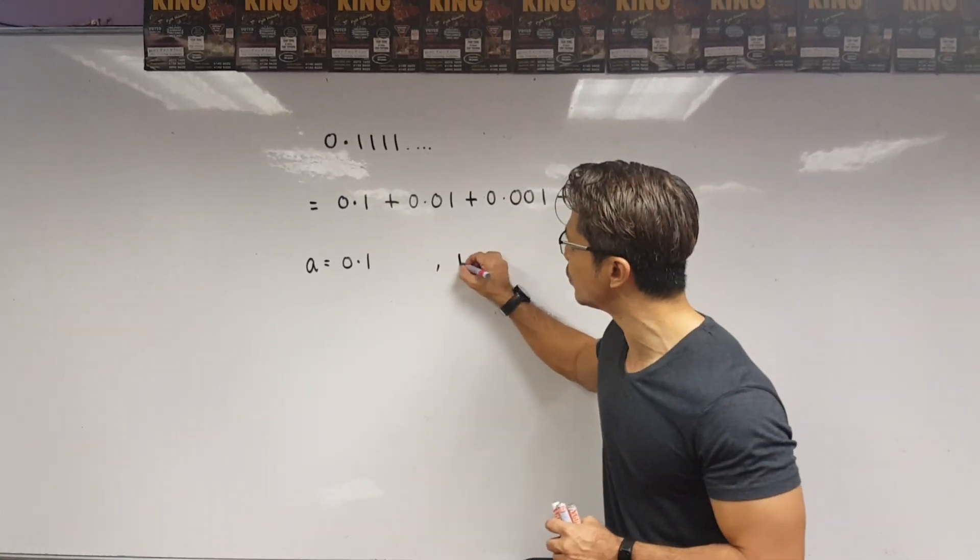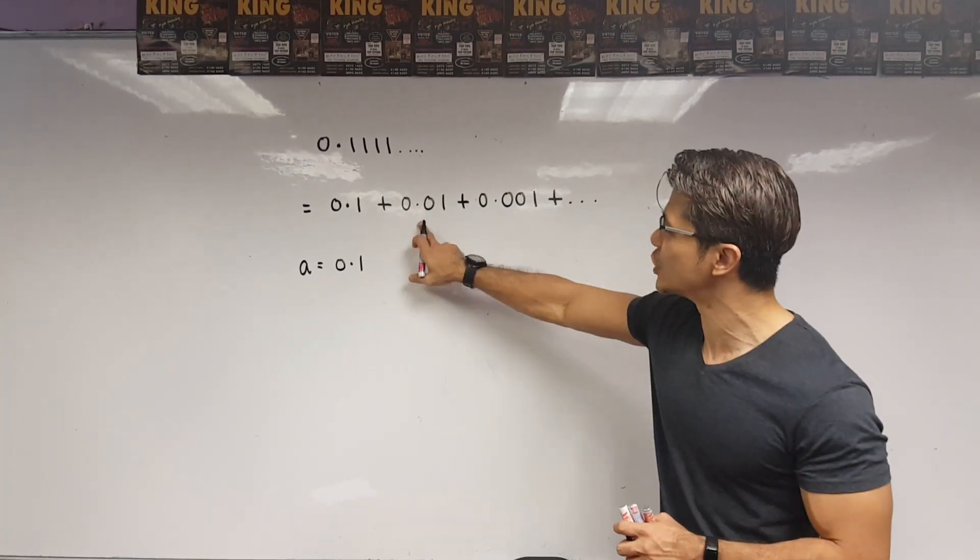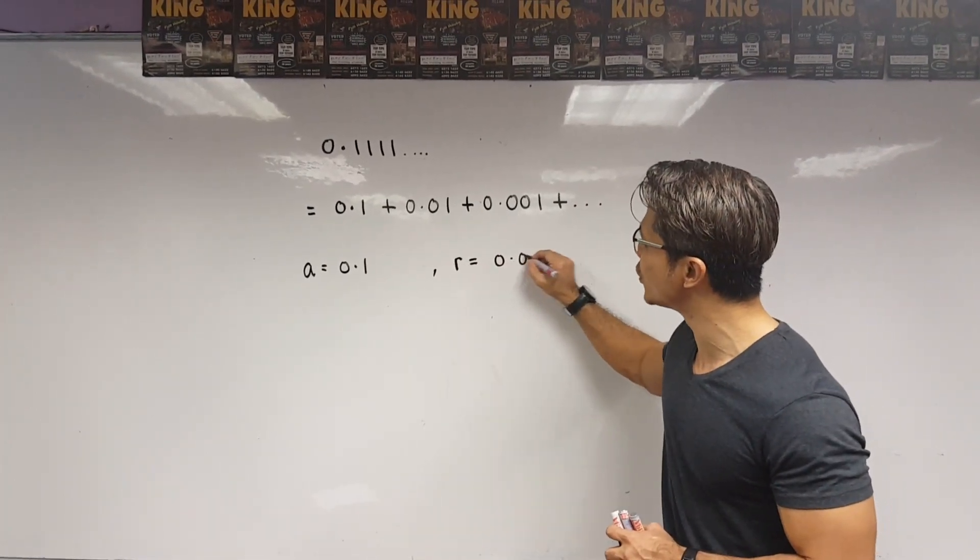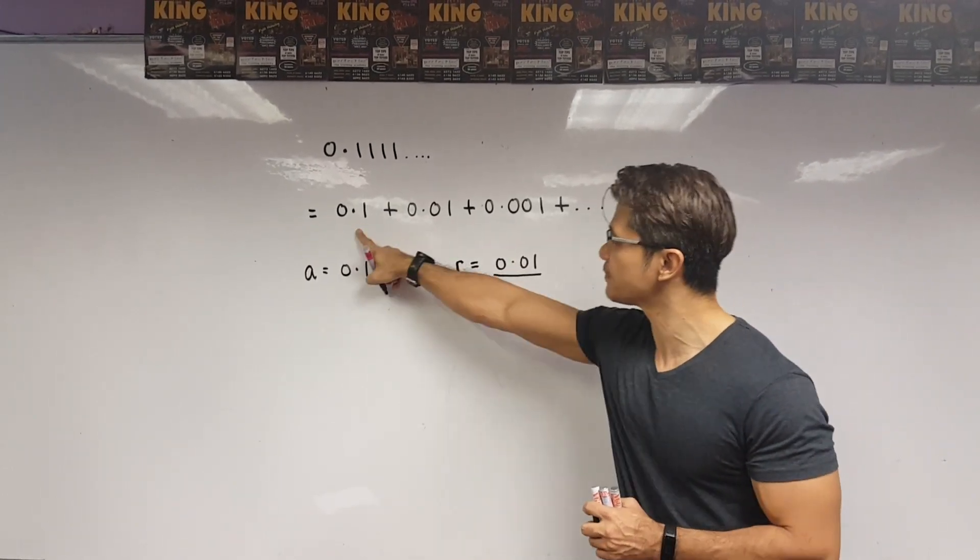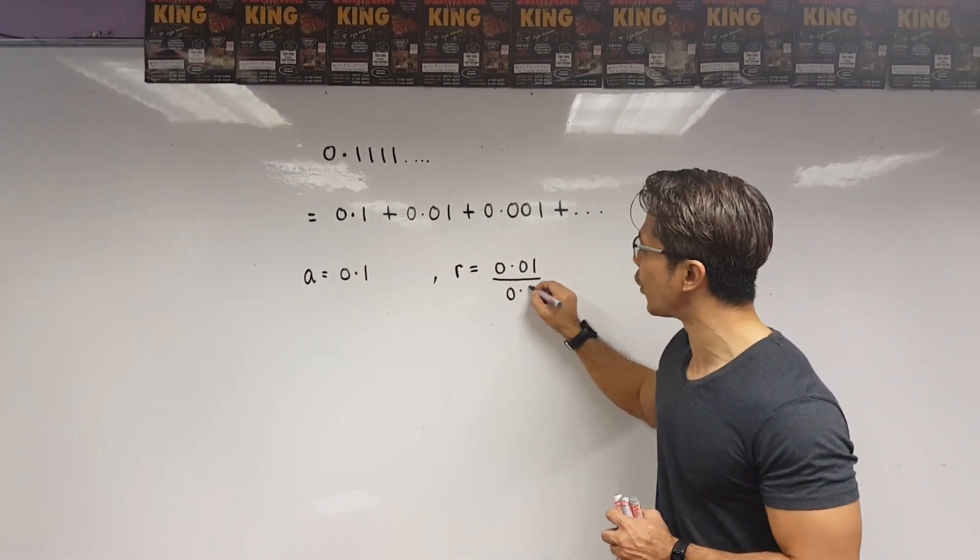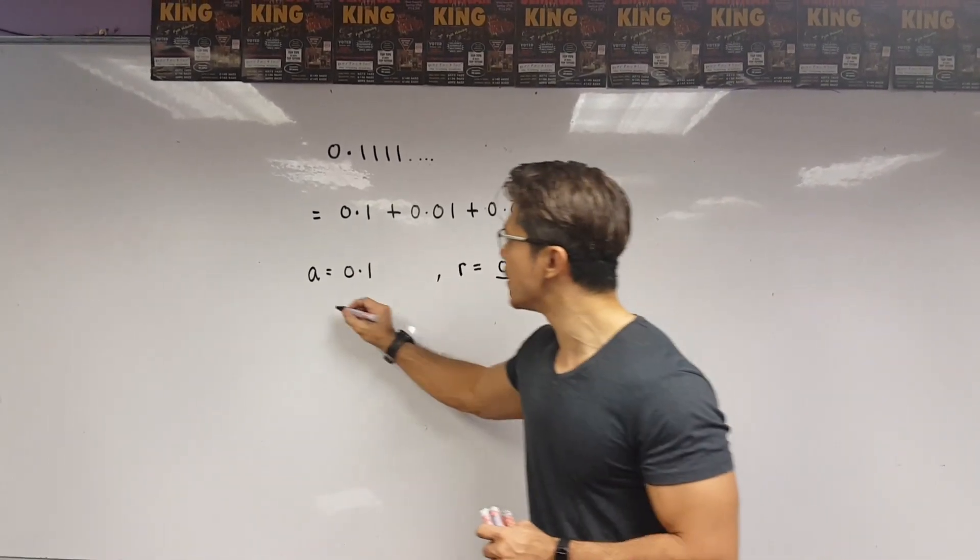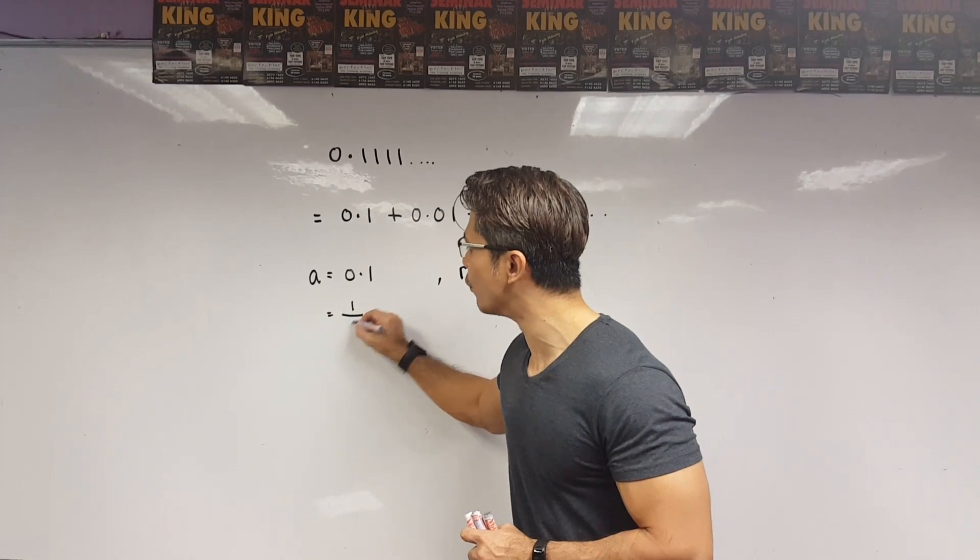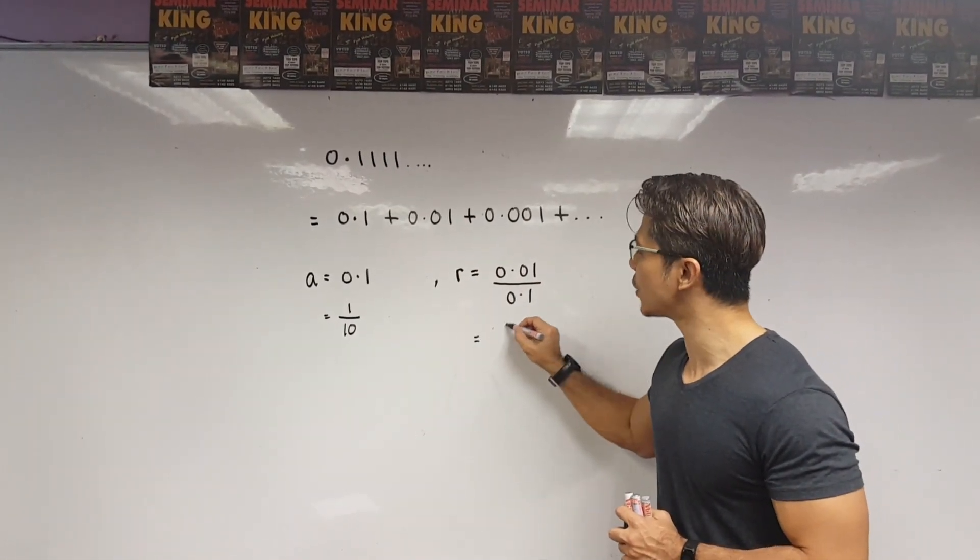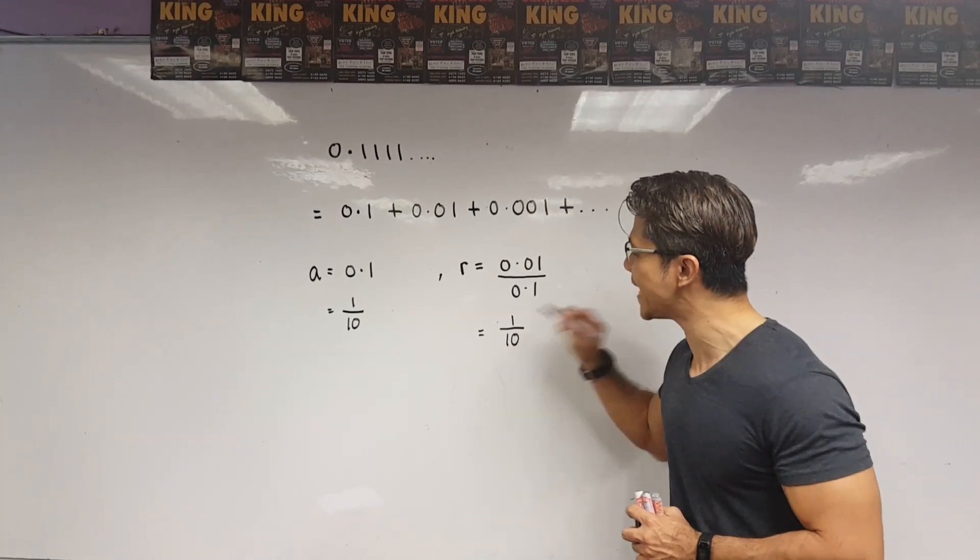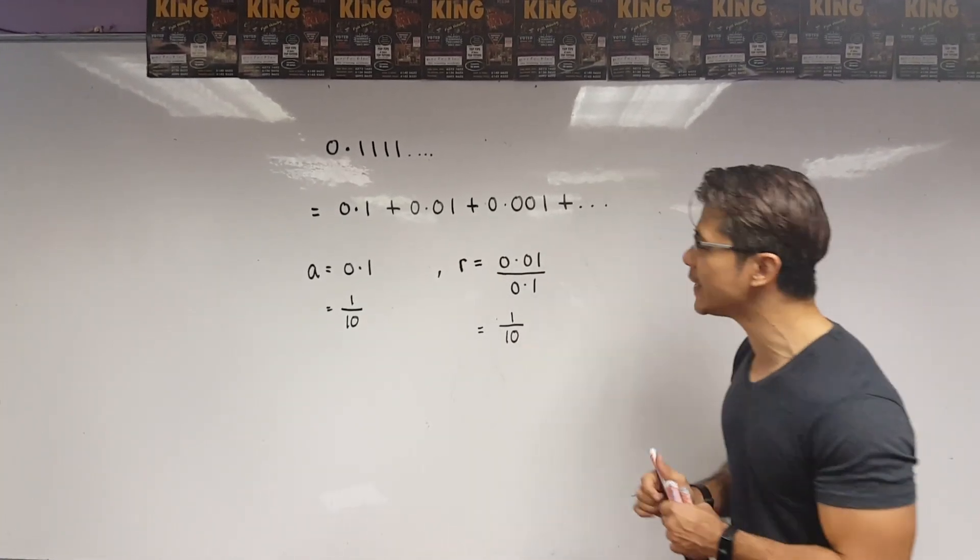To do that, common ratio R is equal to the second term which is 0.01. I divide that with the first term which is 0.1. Now, in fraction form, what I have here is this is 1 over 10. So, we are almost getting a fraction, right?